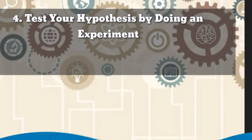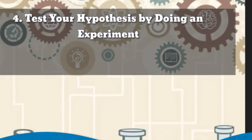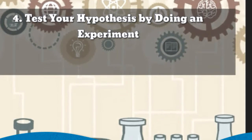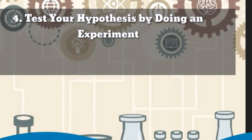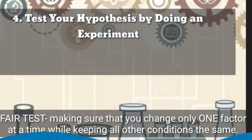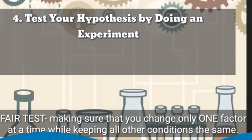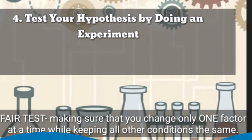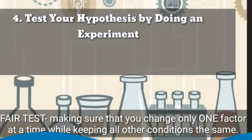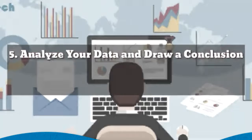The fourth step of the Scientific Method is to test your hypothesis by doing an experiment. Your experiment tests whether your prediction is accurate and thus your hypothesis is supported or not. It is important for your experiment to be a fair test — change only one factor at a time while keeping all other conditions the same. You should also repeat your experiment several times to make sure that the first results were not just an accident.